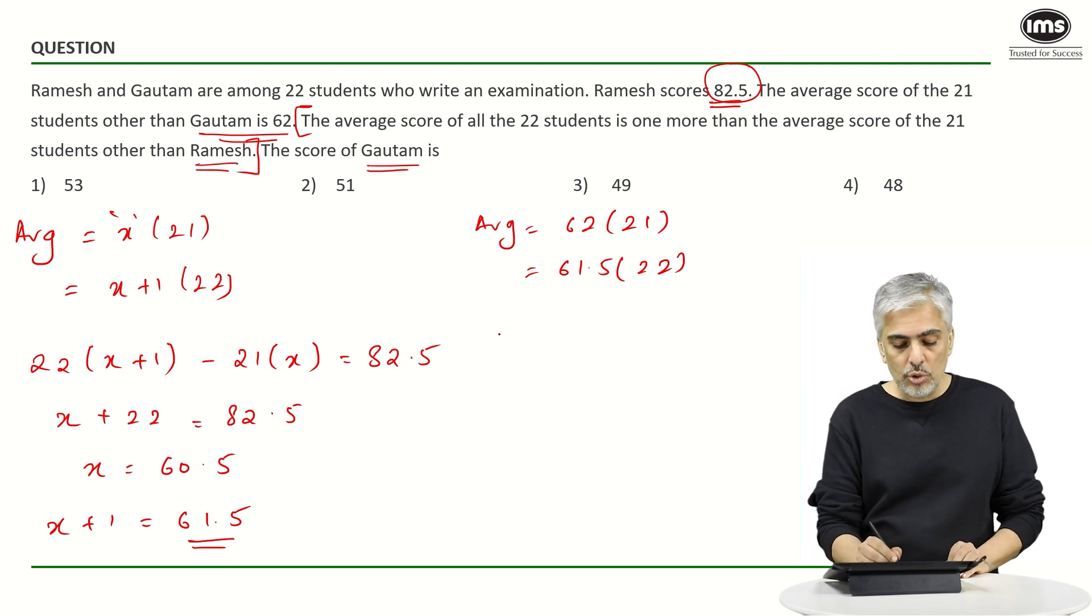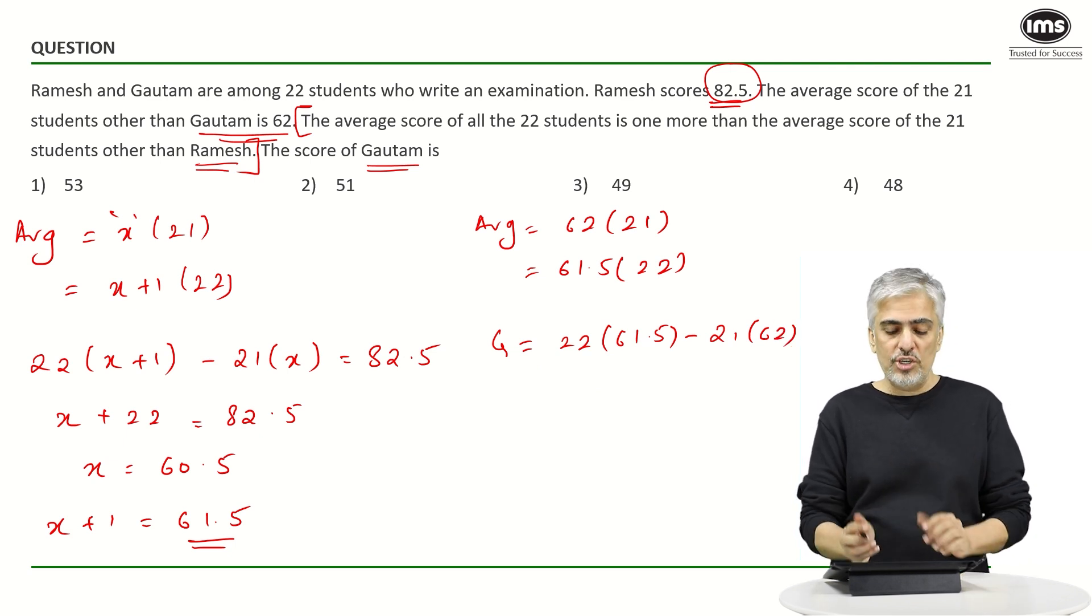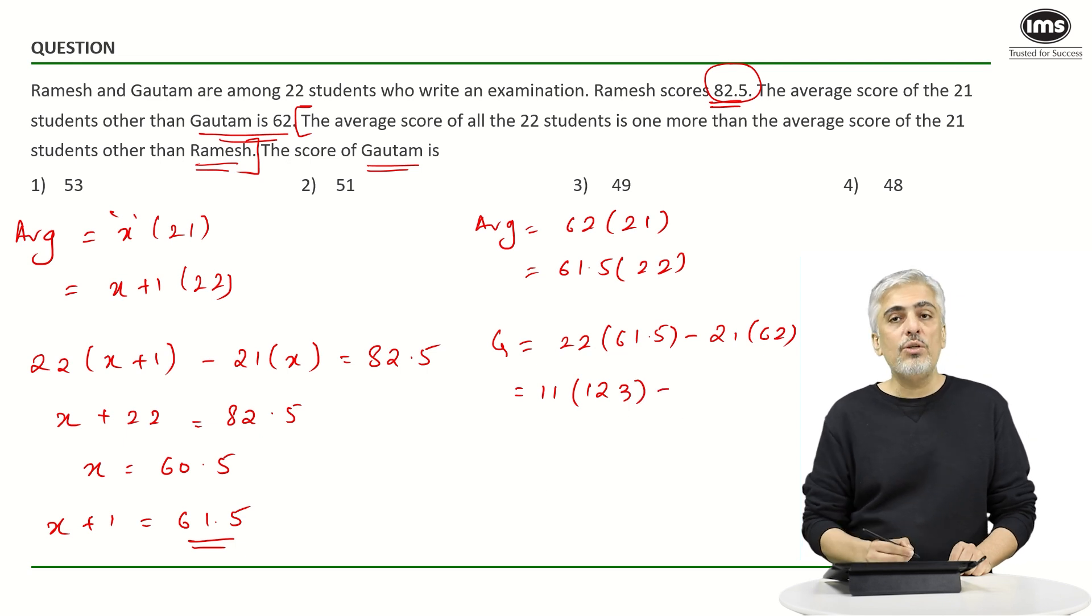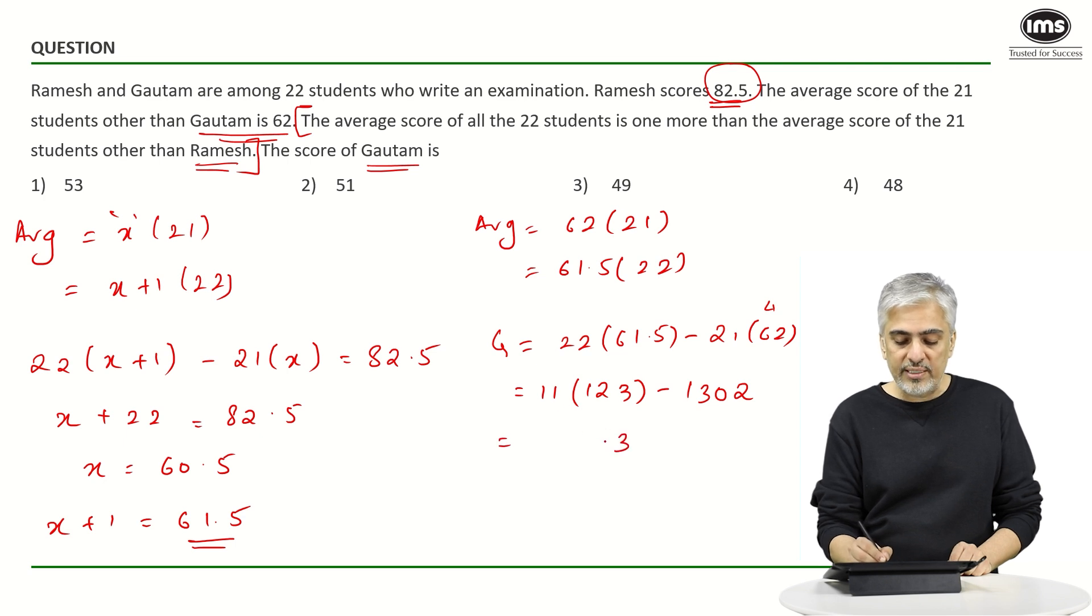So if I now find the difference again between these two, that should give me Gautam's score. So Gautam's score G will be 22 into 61.5 minus 21 into 62. Doing that calculation, just multiply the two inside gives you 11 into, what is double of 61.5, that will become 123 minus 21 into 62. 21 times 2 is 42, 4 carry, 21 times 6 is 126 plus 4 is 130.